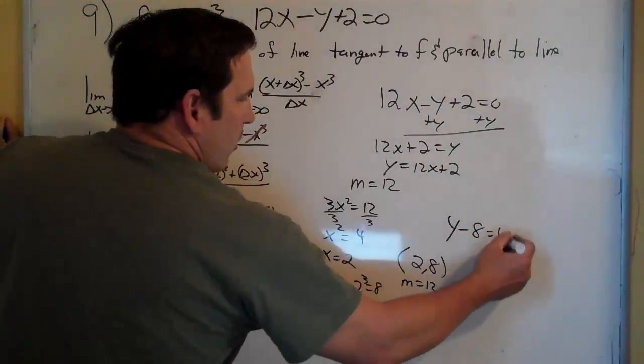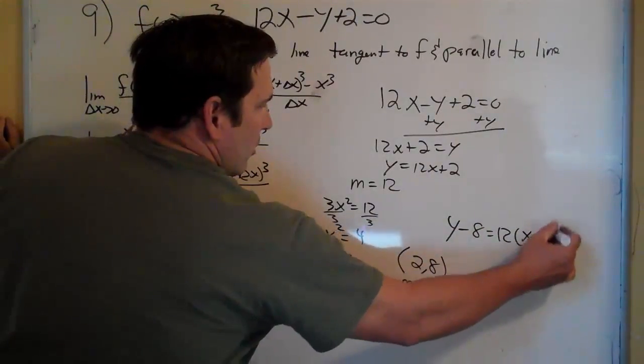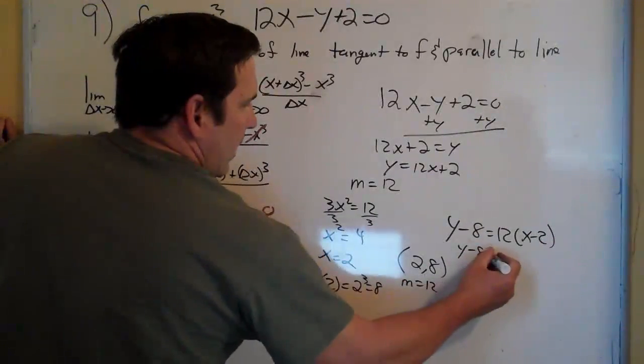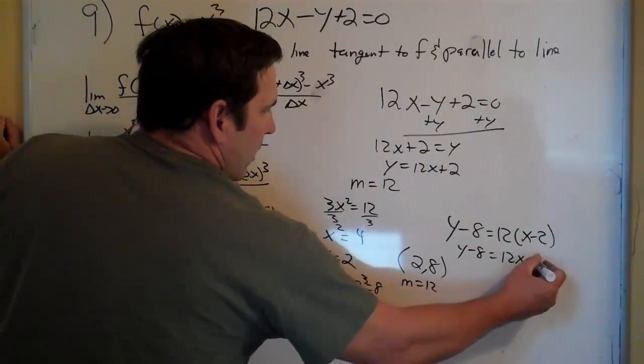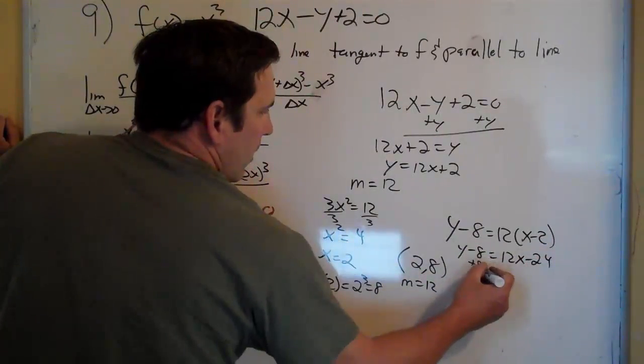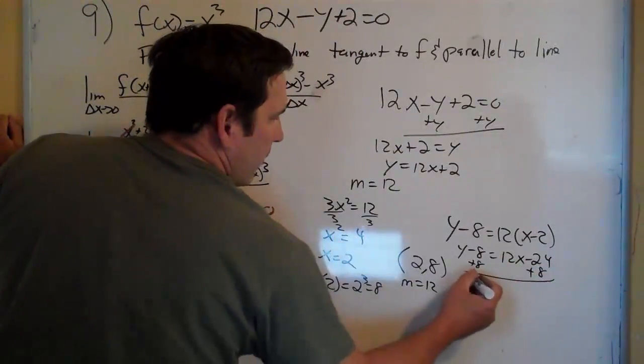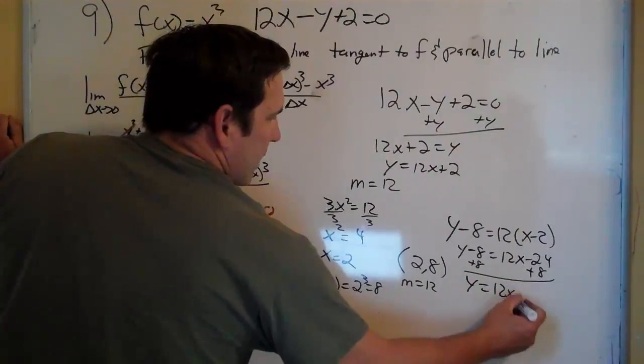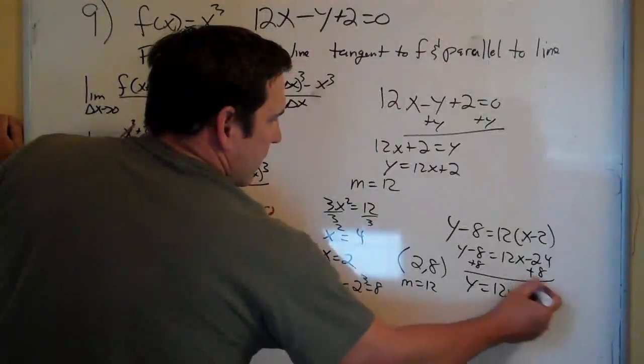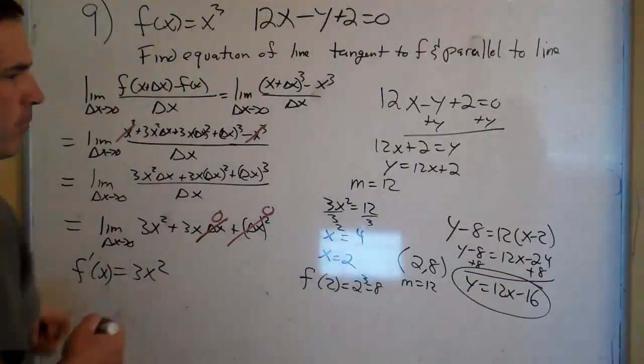y minus 8 equals 12 times x minus 2. y minus 8 equals 12x minus 24, plus 8 plus 8, y equals 12x minus 16. And that's it.